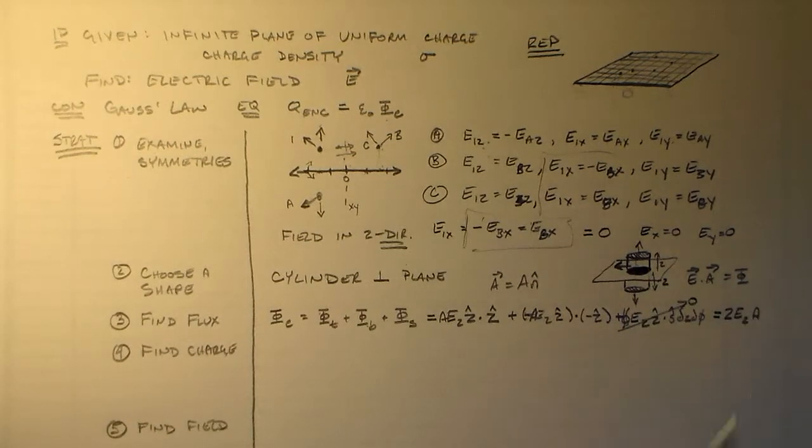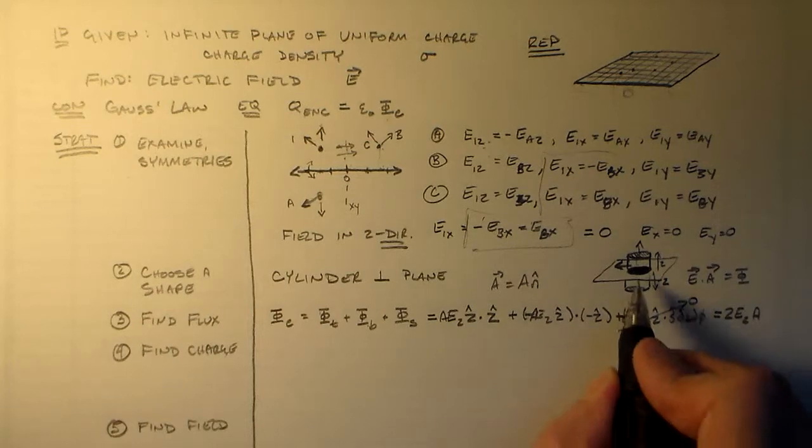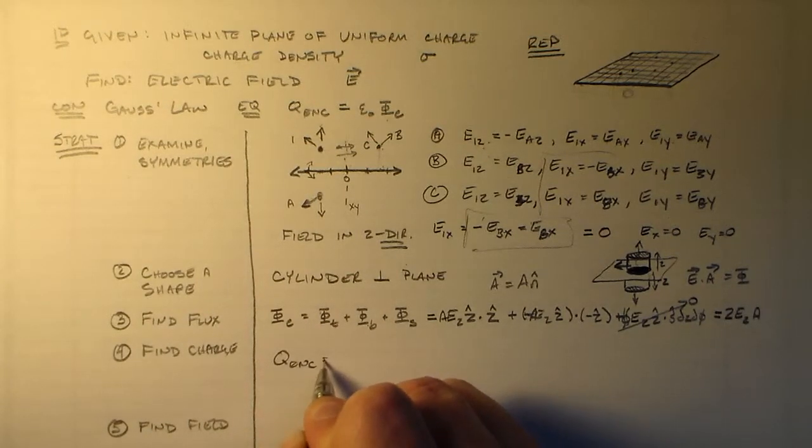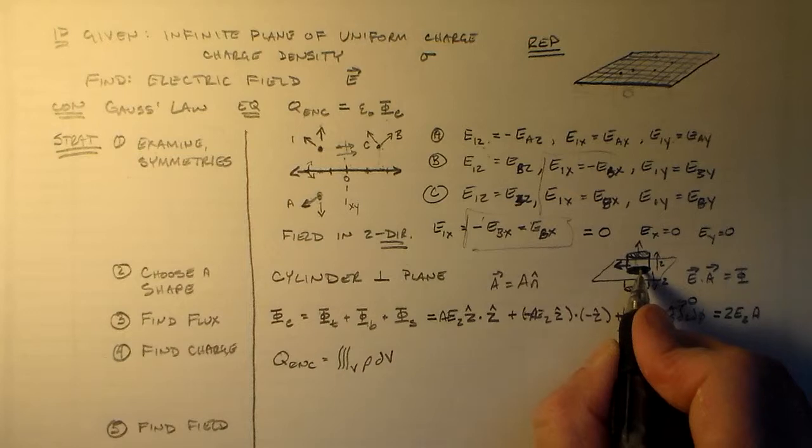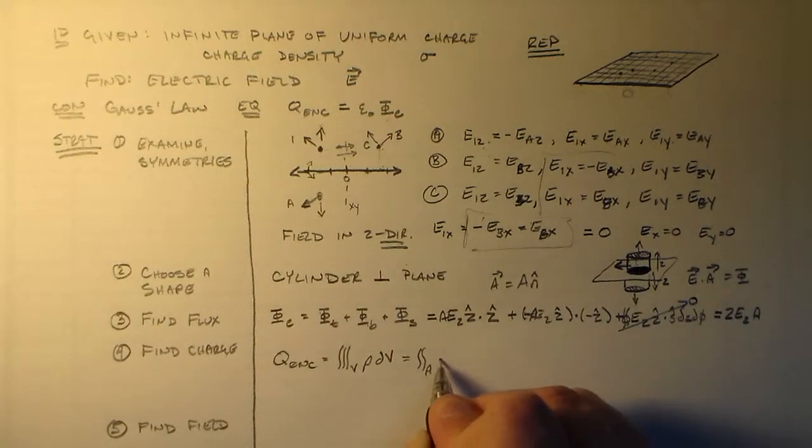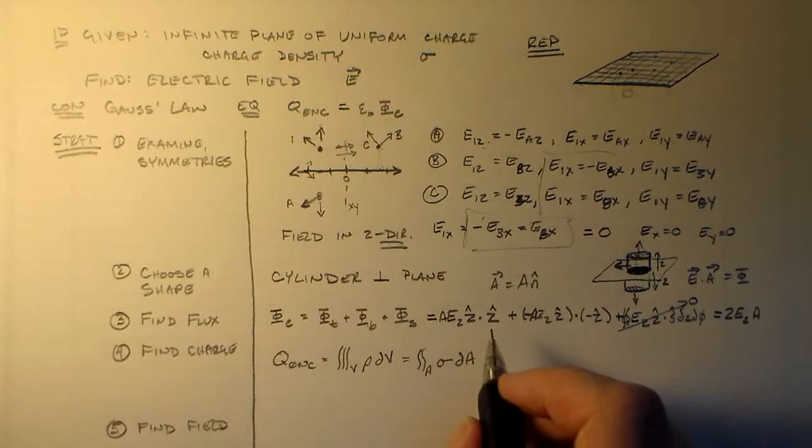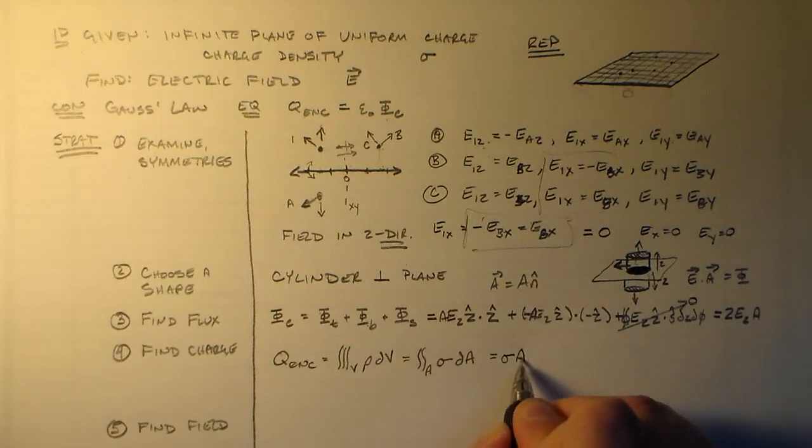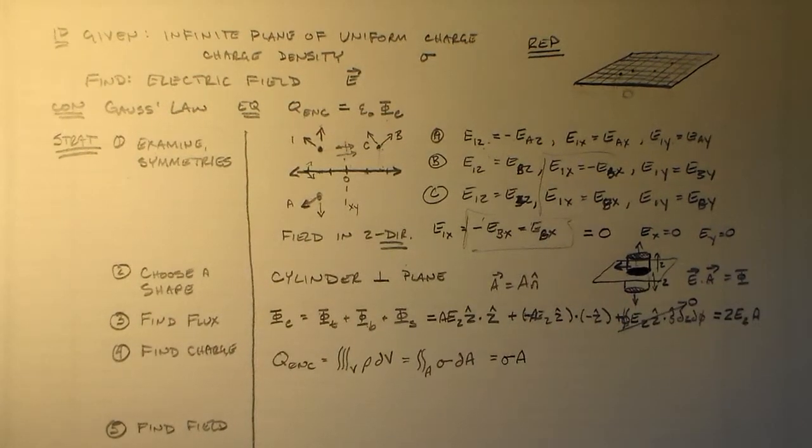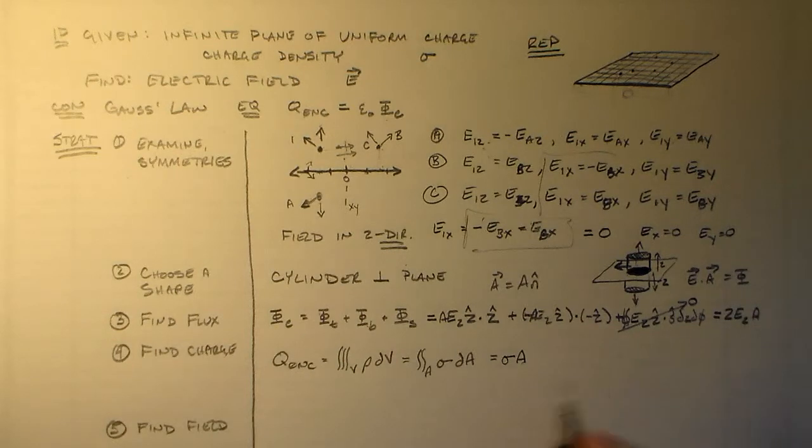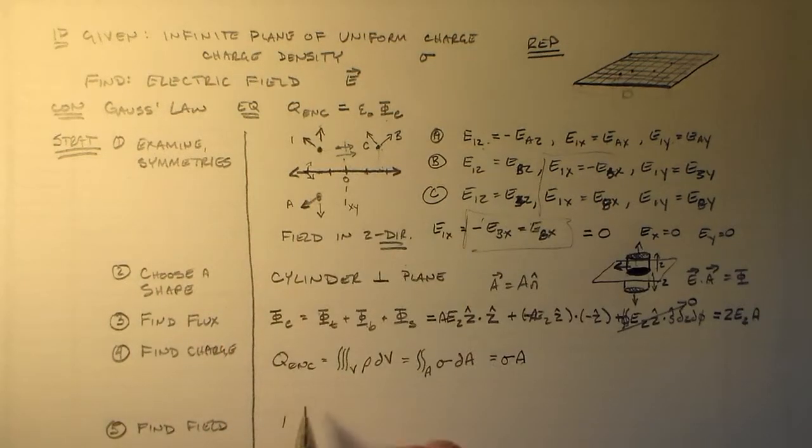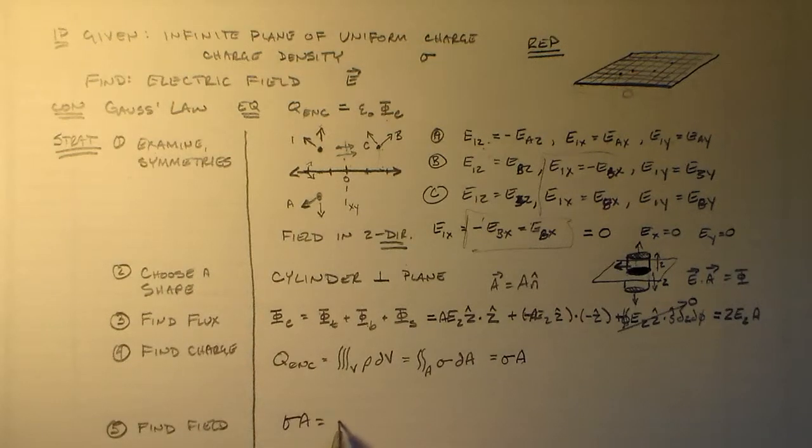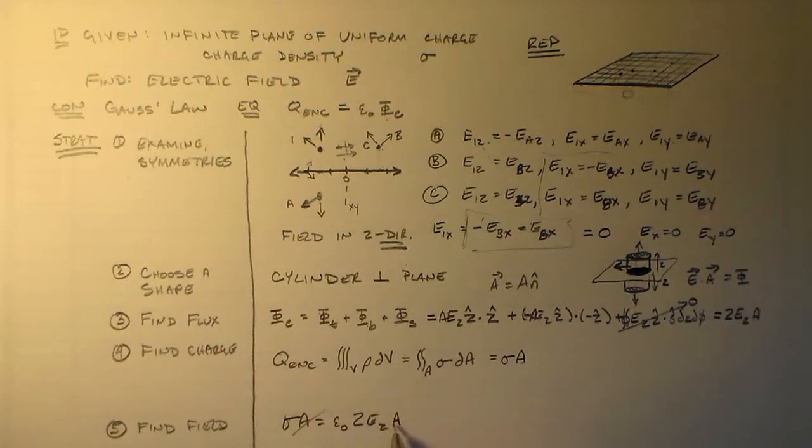And because of the nice symmetries, because it's uniform, our integral for the enclosed charge, which is a volume integral over rho dv, but because this is just in there, that's equal to sigma dA, which is sigma times A. And this A is the same size as these. So sigma A is equal to that times epsilon naught. Which means that the field, if we use q enclosed is equal to sigma A, this guy is equal to epsilon naught times two Ez A. A's are going to cancel. E is in the z direction, so we have E is equal to one over two epsilon naught times sigma in the z hat direction.